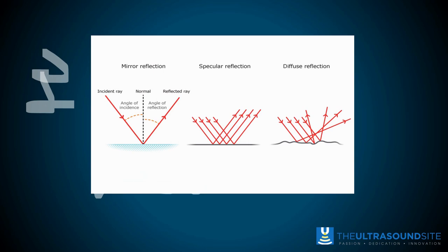This is really important for ultrasound. The crystals in the probe create a sound wave, which hits a reflective surface and bounces back towards the probe. The probe detects that information and sends it back to the ultrasound system to create an image. However, if the sound wave bounces away from the probe rather than back to it, we get anisotropy — a significantly hypoechoic appearance or a complete loss of the reflected signal from that structure.